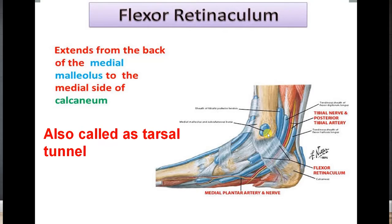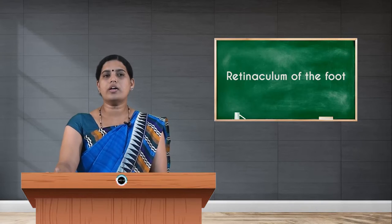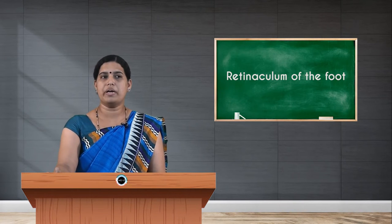Coming to the flexor retinaculum of the foot — its upper attachment is to the medial malleolus of the tibia, and the fibers pass downwards to the medial tubercle on the calcaneus bone. So it runs from the medial malleolus of tibia to the medial tubercle on the calcaneus. This flexor retinaculum is also called the tarsal tunnel.